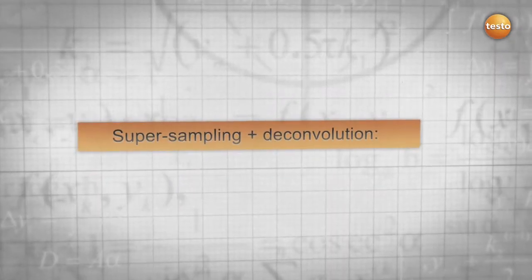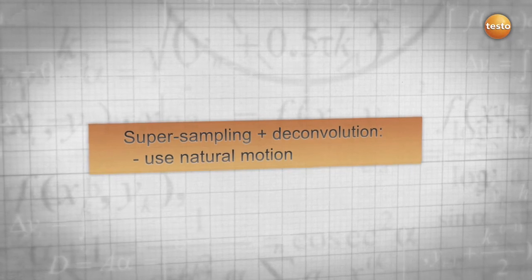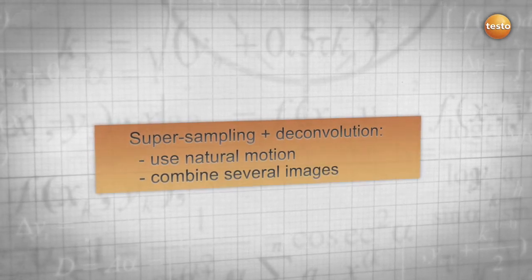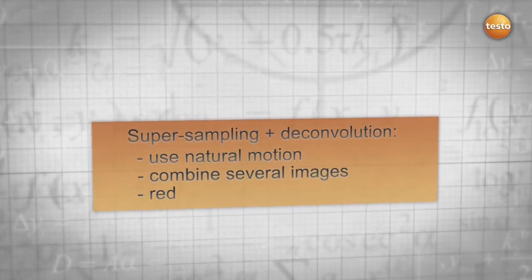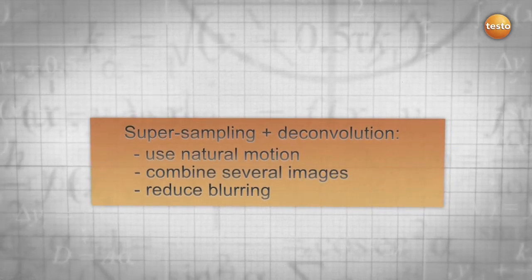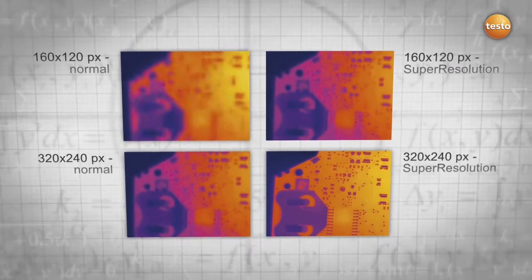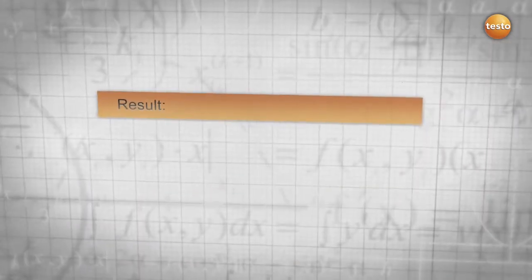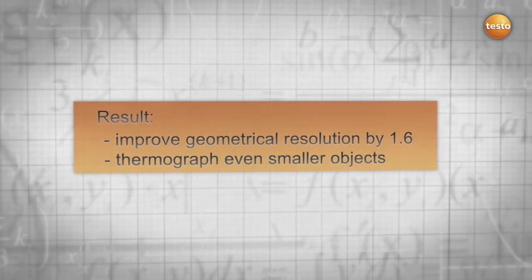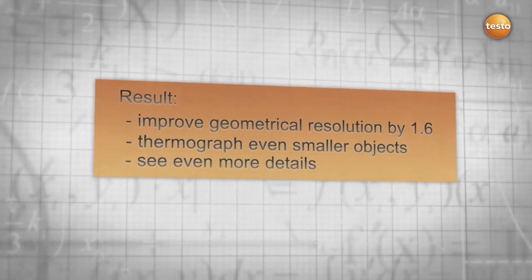The conclusion: with the aid of the natural movement of the hand, Super Resolution combines all advantages of super sampling and deconvolution into a new and revolutionary technology. As a result, Super Resolution improves your resolution and allows you to thermograph even smaller objects and see more details.